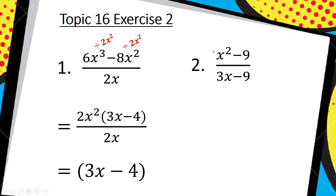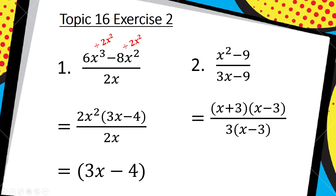Then I'm going to go on to DOTS. Is it DOTS? Yes — x squared is a perfect square and 9 is a perfect square; 3 times 3 is 9, and then I've got my negative. So you're going to have two brackets: x plus 3 and x minus 3. Then I look at my denominator separately — is there a highest common factor? Yes: 3 goes into 3 and 9, so dividing through by 3 gives x and negative 3.